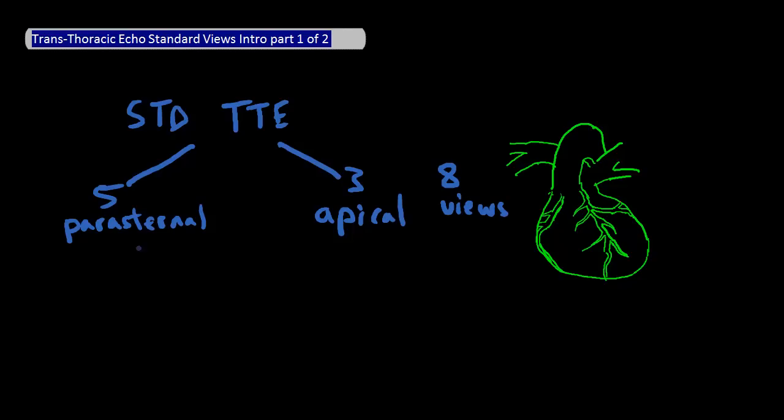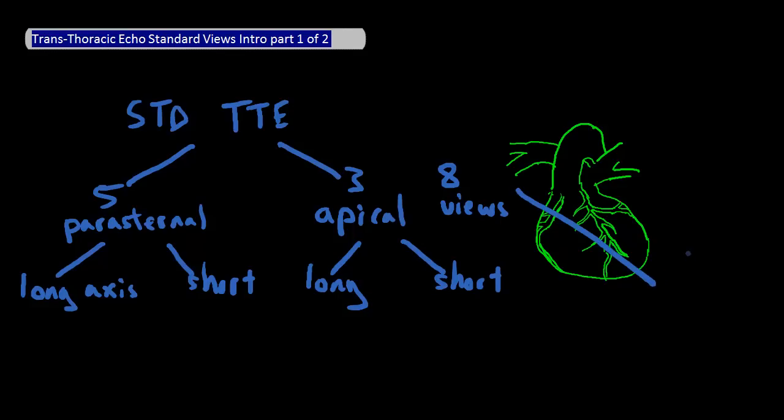These views can be further broken down into long axis and short axis views. Long axis views cut across the heart along its length like this, while short axis views cut across the heart along its width like this. At the parasternal position, we have one long axis view and four short axis views.